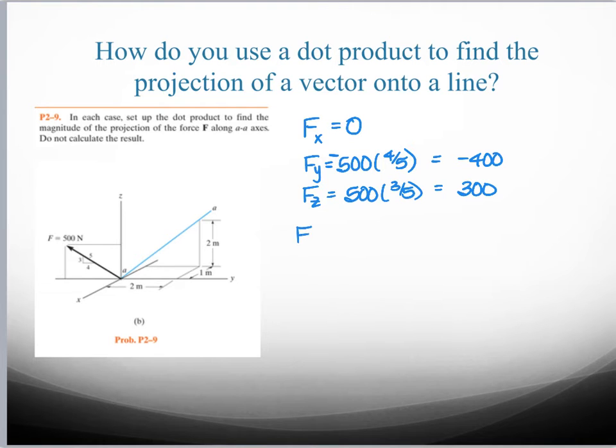So the way that I could write this force in unit vector form will be minus 400 J plus 300 K. All right. So that's how I have that force.